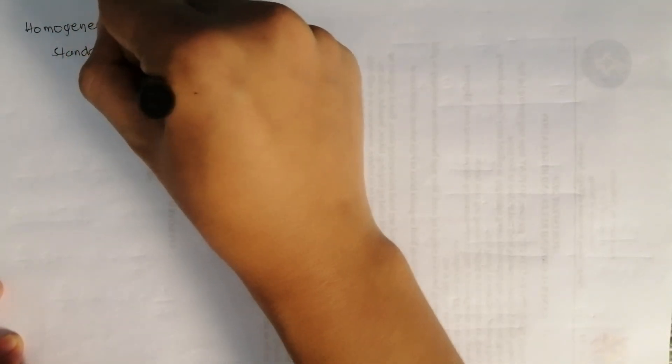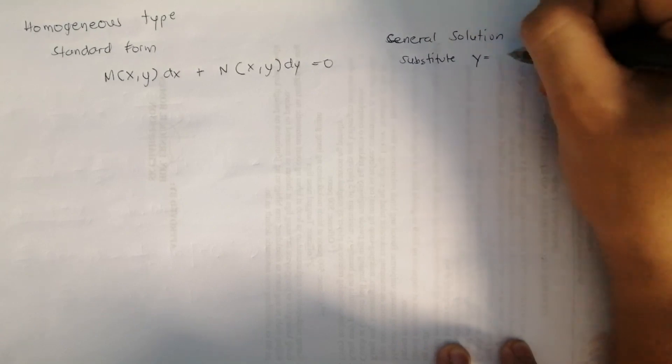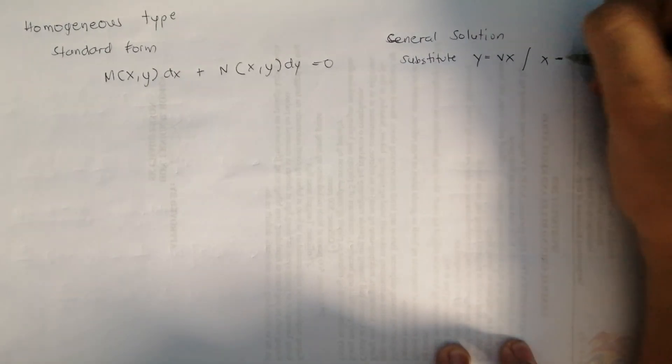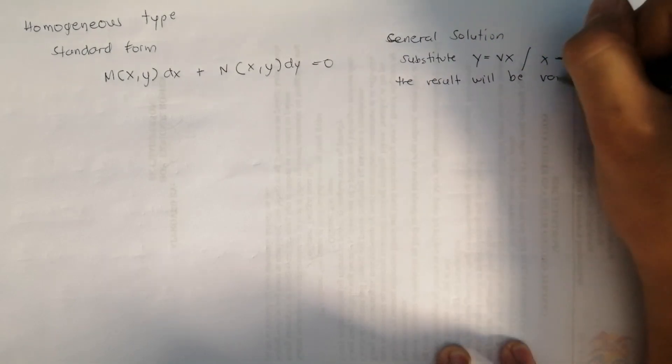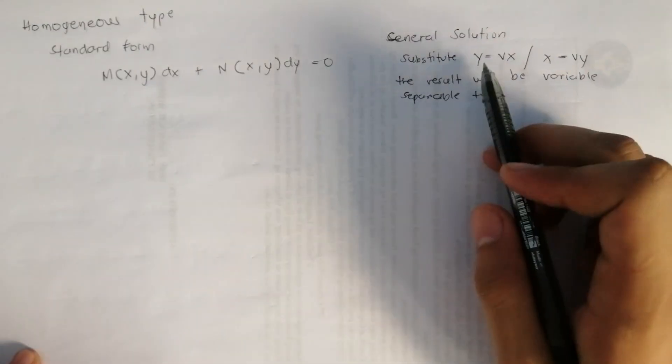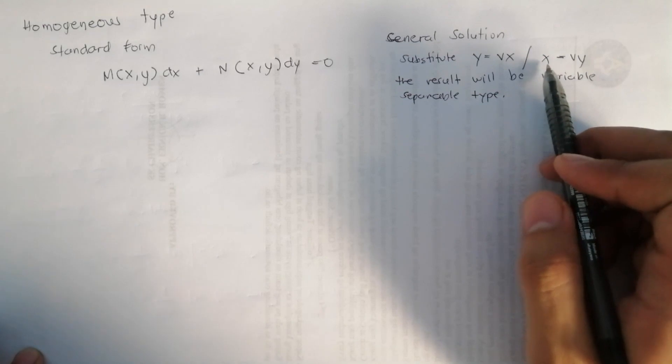We have M(x,y) dx plus N(x,y) dy equals zero. For the general solution, substitute y equals vx or x equals vy so that the result will be a variable separable type of equation.